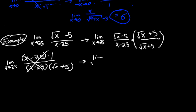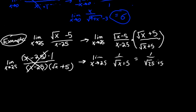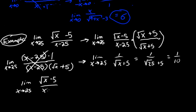After canceling, we get the limit as x approaches 25 of 1 over the square root of x plus 5. Plugging in 25, we get 1 over the square root of 25 plus 5, which is 1 over 5 plus 5, which equals 1 over 10. So the limit as x approaches 25 of the square root of x minus 5 divided by x minus 25 equals one tenth.